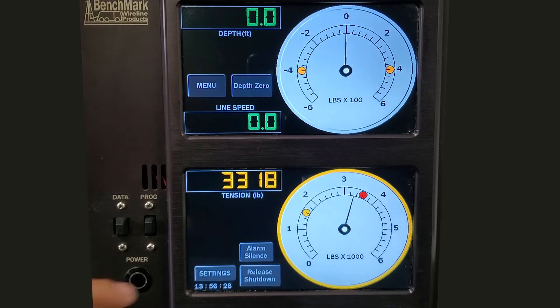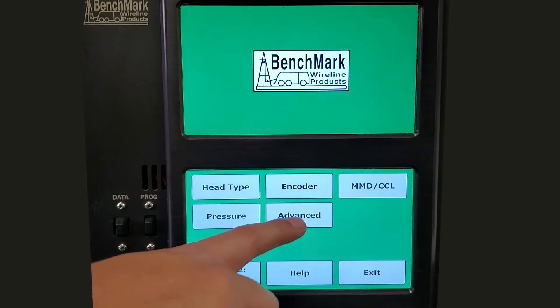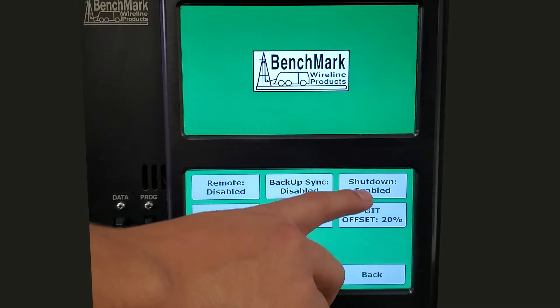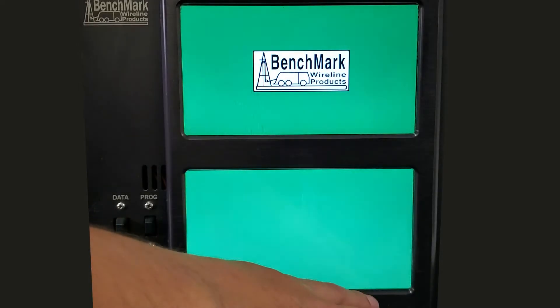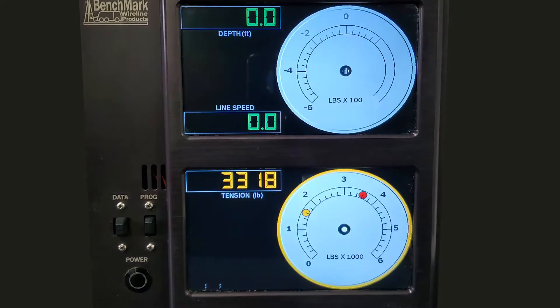To do that, go to Settings, Advanced, Shutdown Disabled, Back, Exit, and the Shutdown Disabled message will be displayed.